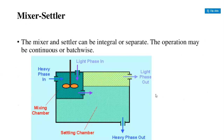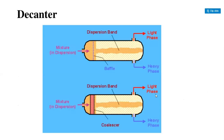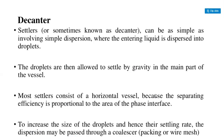The mixers and settlers can be integrated or separate, and operation may be continuous or batch-wise. Decanters, or settlers, can be as simple as involving dispersion where the entering liquid is dispersed into droplets, which are then allowed to settle by gravity in the main part of the vessel. Most settlers consist of a horizontal vessel because operating efficiency is proportional to the area of the phase interface. To increase the size of the droplets and their settling rate, the dispersion may be passed through a coalescer.